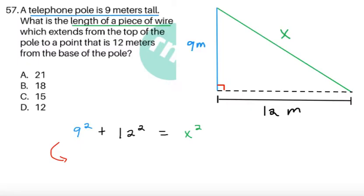Item 57: A telephone pole is 9 meters tall. What is the length of a piece of wire which extends from the top of the pole to a point that is 12 meters from the base of the pole? Obviously the figure is not given, but this will be the figure. The telephone pole is 9 meters tall, so we just draw the telephone pole first. And then we're asked for the length of the piece of wire which extends from the top of the pole, which is this one highlighted in red, to a point that is 12 meters from the base of the pole.